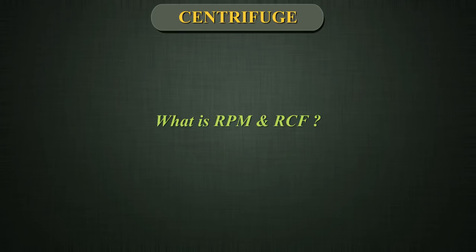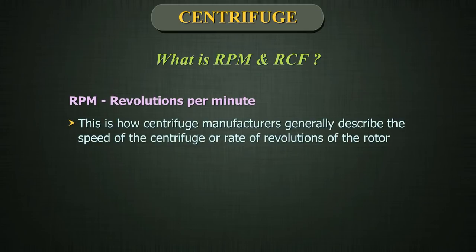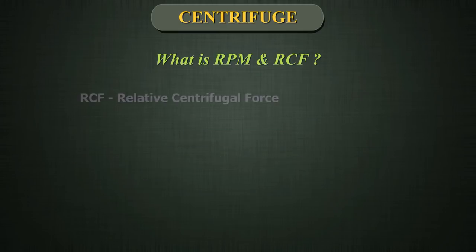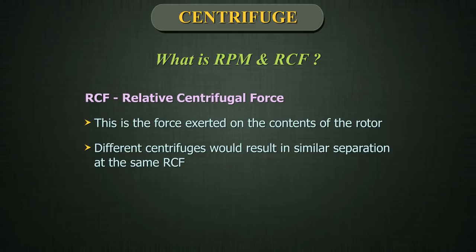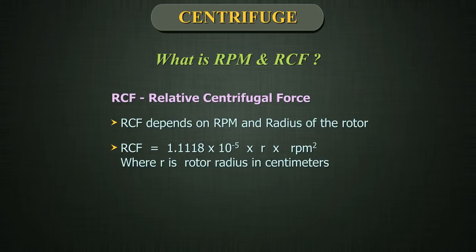RPM stands for revolutions per minute. This is how centrifuge manufacturers generally describe the speed of the centrifuge, or the rate of revolutions of the rotor. The force applied on the contents of the rotor may differ from one model to another. RCF is the relative centrifugal force — this is the force exerted on the contents of the rotor. Different centrifuges would result in similar separation at the same relative centrifugal force.